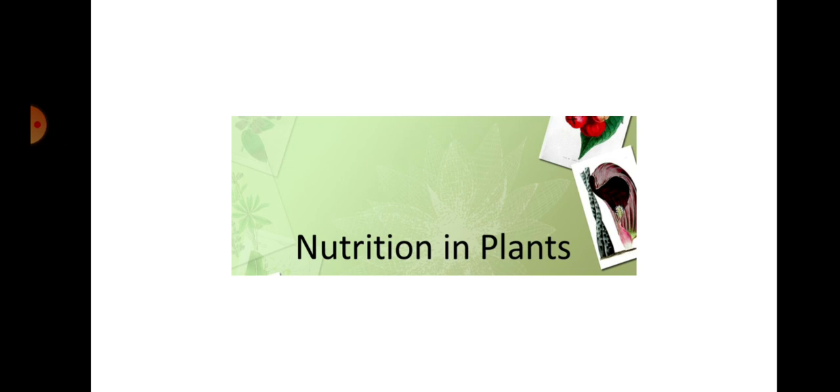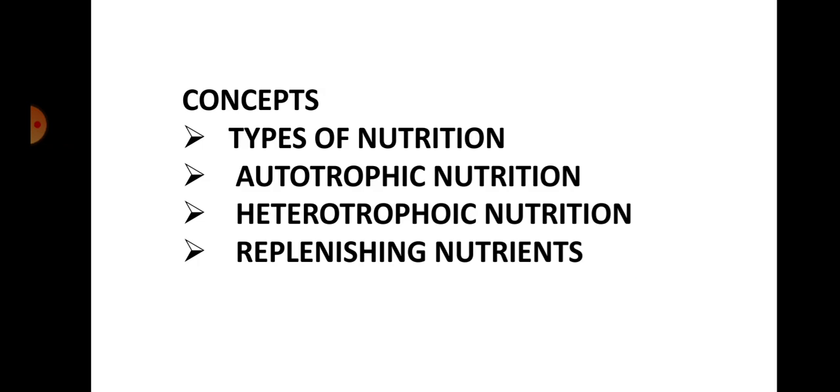In this lesson there are four concepts. The first one is types of nutrition. The second one is autotrophic nutrition. The third one is heterotrophic nutrition. The fourth one is replenishing nutrition. These are the four varieties of concepts in this lesson.